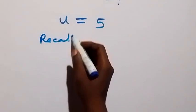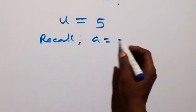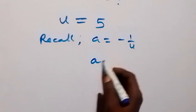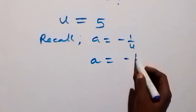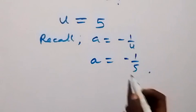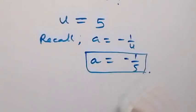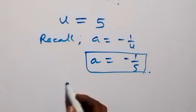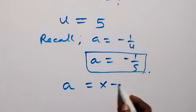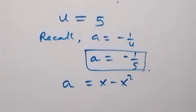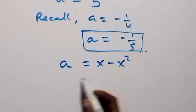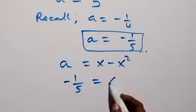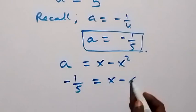We can recall that a equals to minus 1 over u. From here, a is now equals to minus 1 over 5. And what we have is that a was represented as x minus x squared. So it implies that minus 1 over 5 equals to x minus x squared.